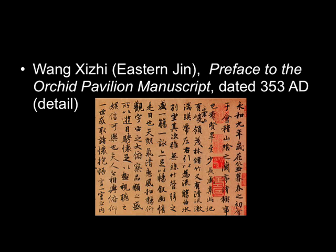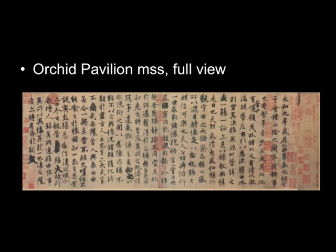Let me show you a full view of Wang Xizhi's Orchid Pavilion manuscript. This is the full manuscript of the Orchid Pavilion Preface — the poem where Wang Xizhi says he gathered with his friends on this day in 353 A.D., they were toasting the beautiful weather, enjoying the scenery, thinking about how quickly life passes, and having this kind of beautiful and melancholy experience. There you can see the variations in the characters and the variations in the brushstrokes.